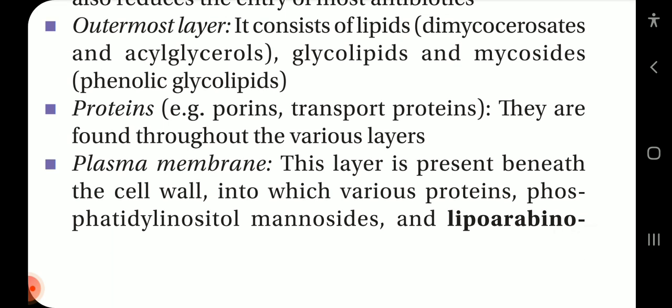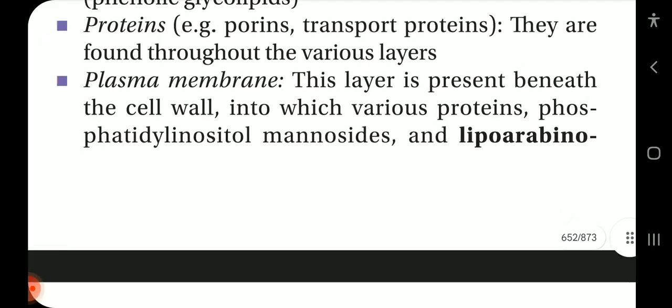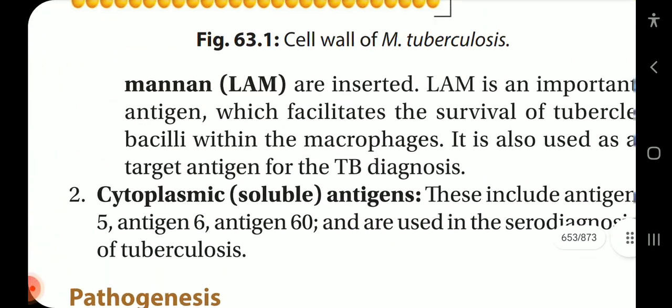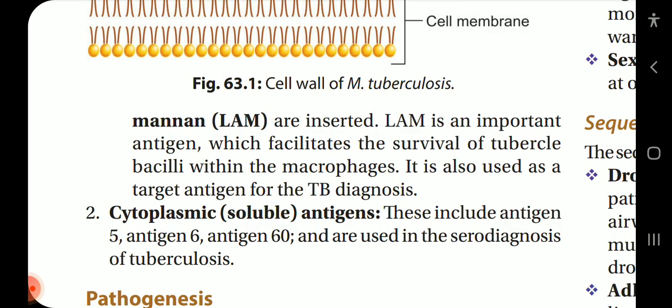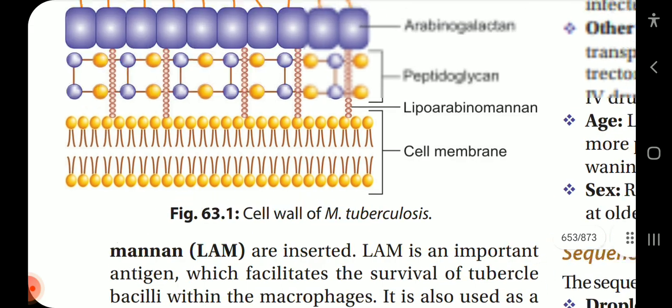Proteins such as porin transport proteins are found throughout the various layers. The plasma membrane is the layer present beneath the cell wall, into which various proteins, phosphatidylinositol mannosides and lipoarabinomannan (LAM) are inserted. LAM is an important antigen which facilitates the survival of tubercle bacilli within macrophages and is also used as a target antigen for TB diagnosis. Cytoplasmic soluble antigens include antigens 5, 6, and 60, and are used in the serodiagnosis of tuberculosis.